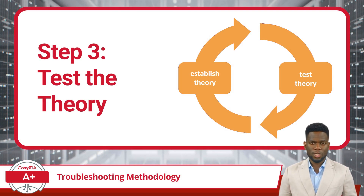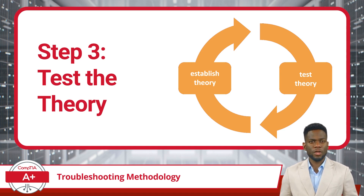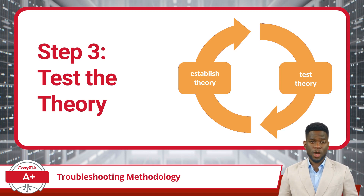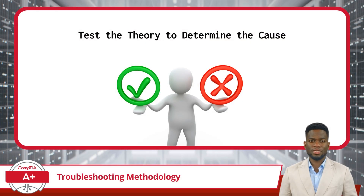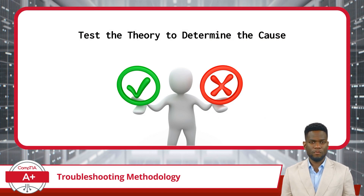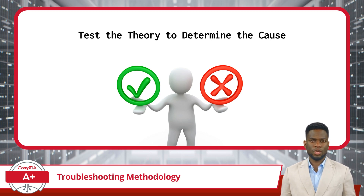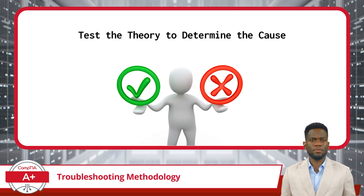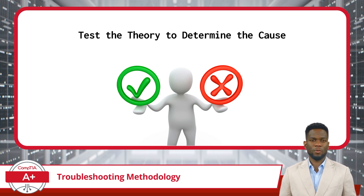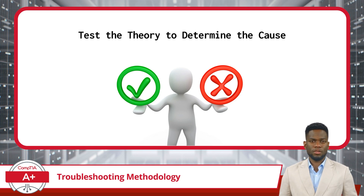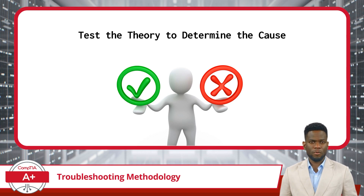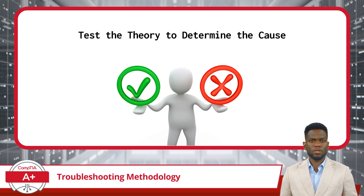Step 3 in CompTIA's troubleshooting process is to test the theory to determine the cause. Remember, Steps 2 and 3 are an iterative process and you might need to repeat them a number of times. Testing a theory will require some kind of experiment or action to confirm the cause — this can include swapping a component for a known good one or performing an experiment on a test system. If testing does not confirm your theory, establish a new theory. If you run out of ideas, escalate the problem by seeking help from another technician, a supervisor, or a specialist.